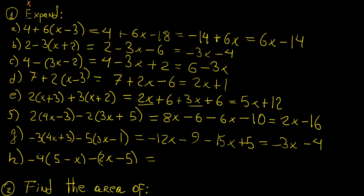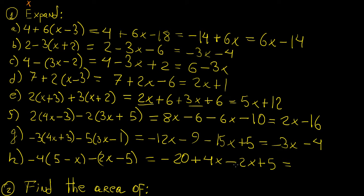For this one we have minus 4 times 5, that's minus 20. Minus times minus is plus, so that would be plus 4x. This one here is going to be minus 2x, and minus times minus is plus. Collecting like terms, we have 2x, and then minus 20 plus 5, which is going to be minus 15.